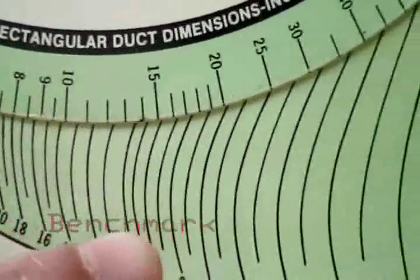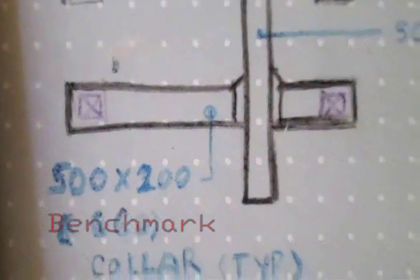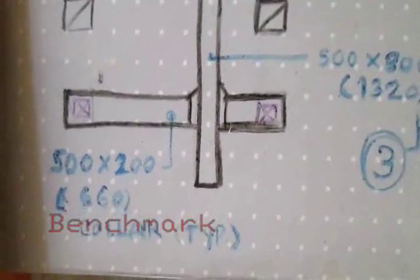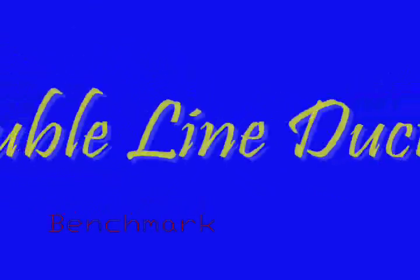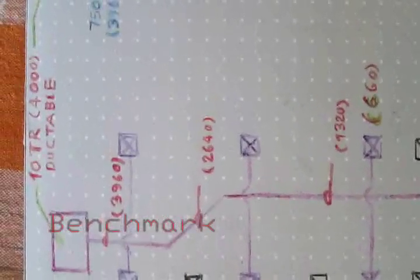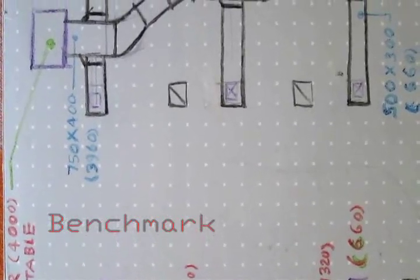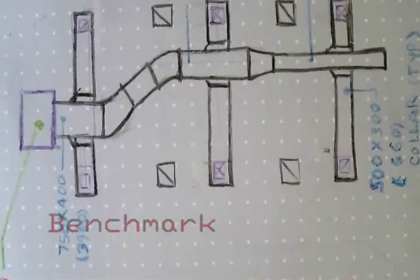For the second case, the collar size for 660 CFM at 0.1 friction gives approximately 667 CFM with a velocity of 600, which is acceptable. The duct sizes we are getting are 20 inch by 18 inch, that is 500mm by 200mm, because we have a diffuser size of 50 inch by 15 inch, which is around 375mm by 375mm.